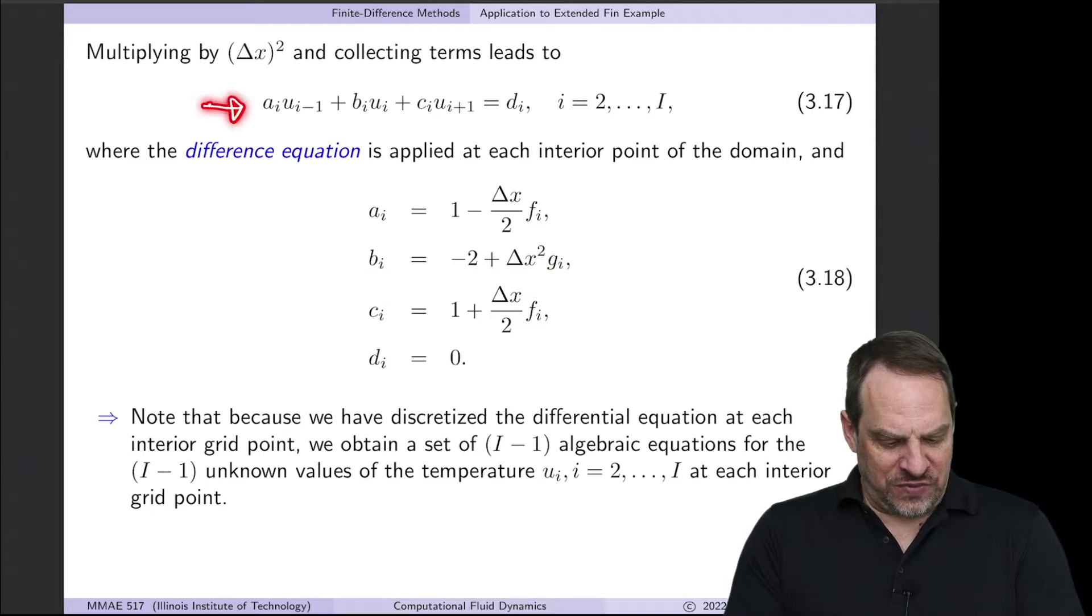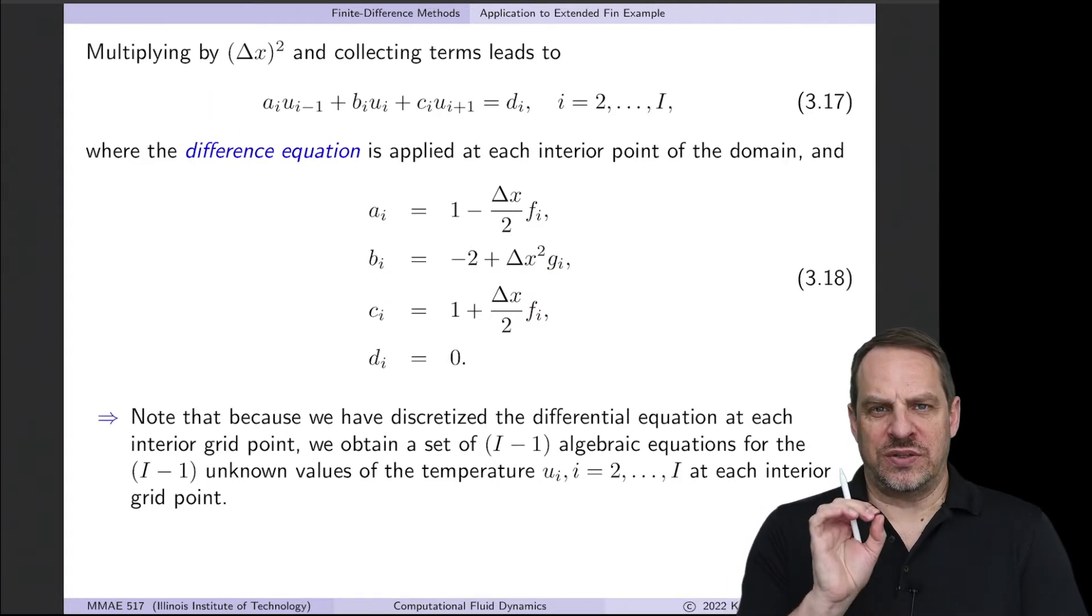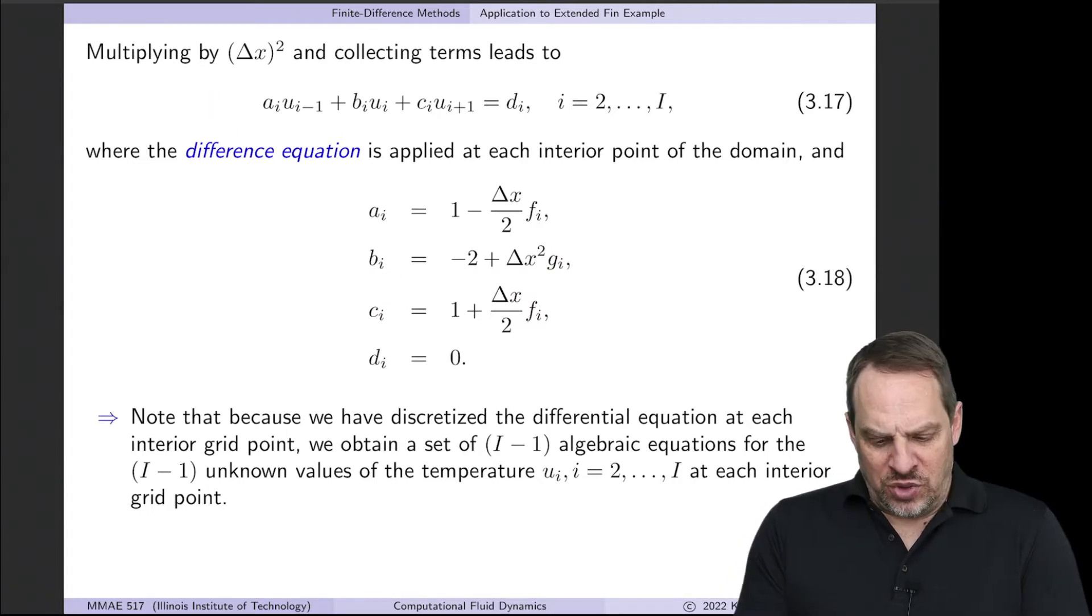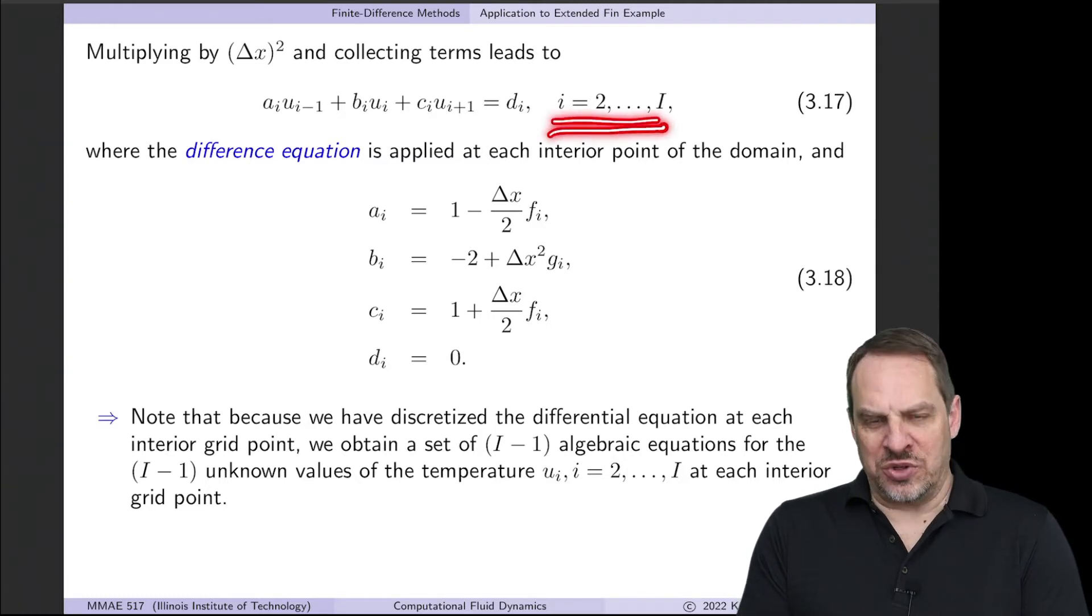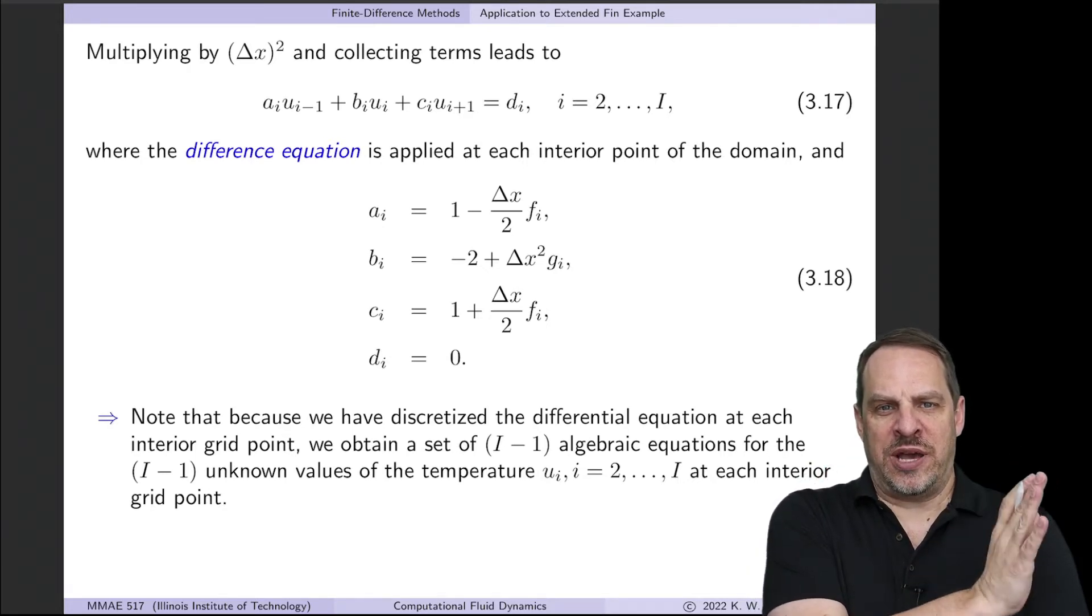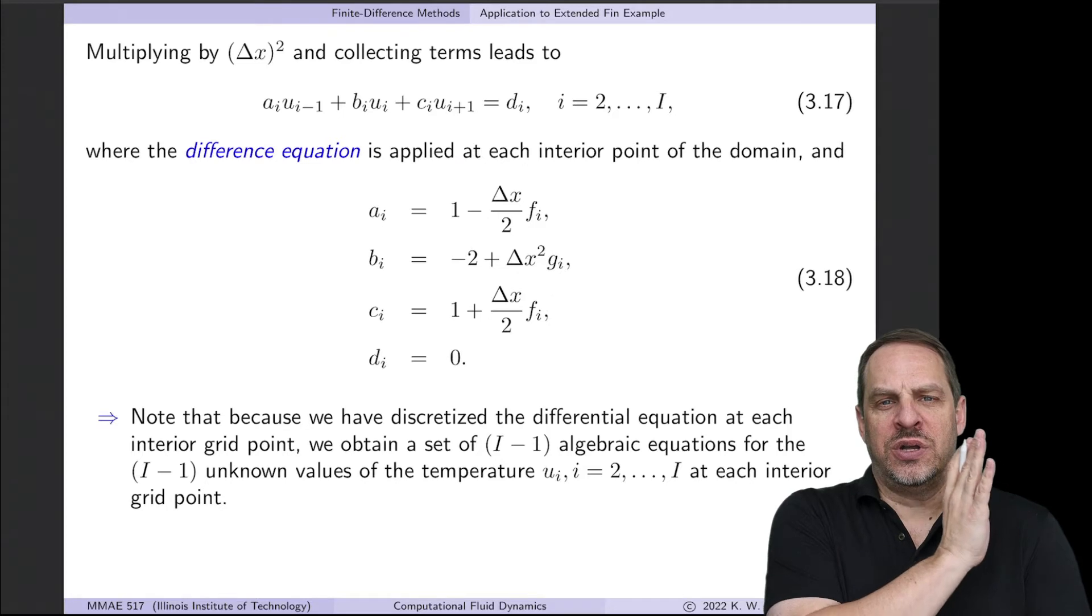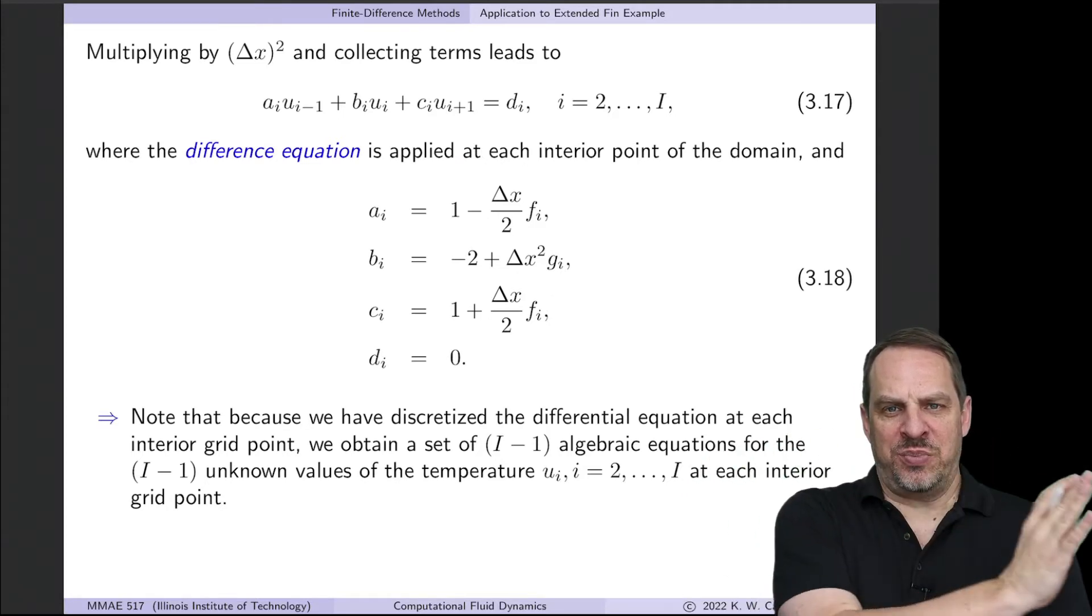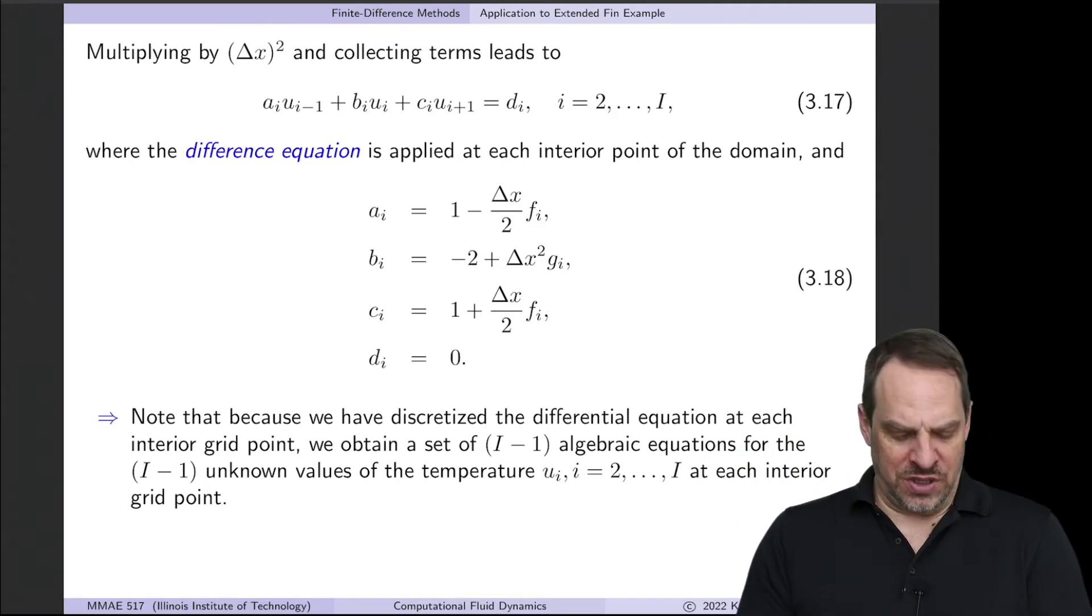So we have our finite difference equation in this nice straightforward form. Once again, we're emphasizing here that we're going to apply this at every interior point. So we apply it at i is equal to 2, 3, 4, all the way up to capital I, where capital I, remember, is the number of subintervals that we're dividing up our full domain, the length of the fin, into.